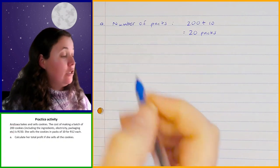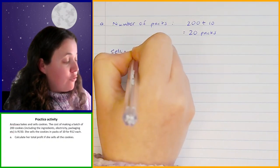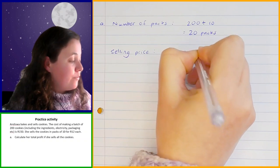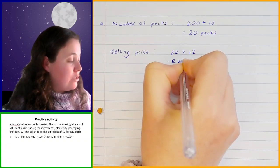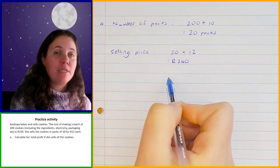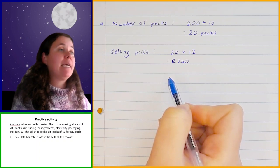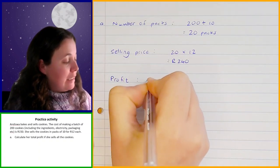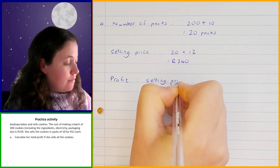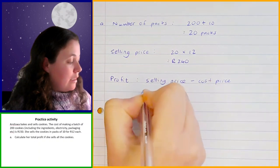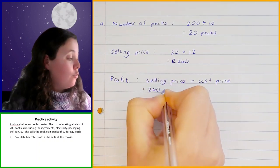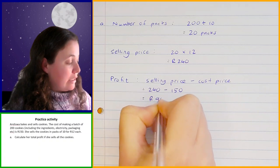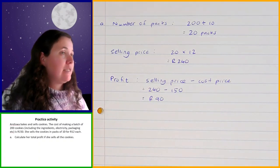Now we want to know how much she would be able to sell that for. The selling price is how much she sells all of those packs for. So that is 20 times 12 — 20 packs at 12 Rand each — and that gives you 240 Rand. But that's not her profit; that is the amount that she sold it for. We still have to take into account the amount that it cost her in the first place. So her profit is going to be the selling price minus the cost price: 240 minus 150, which gives you 90 Rand. Her profit was 90 Rand for selling all of the cookies.